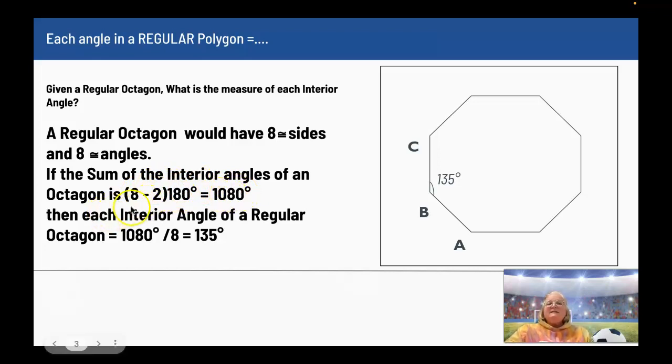Then each interior angle of a regular octagon has to be 1080 degrees divided by 8. Since all of the sides are equal to each other, all of the angles are equal to each other, and there are 8 angles. If I add up 8 of the same thing, if I divide by 8, I get what each one is equal to. So each one of these angles is 135 degrees.